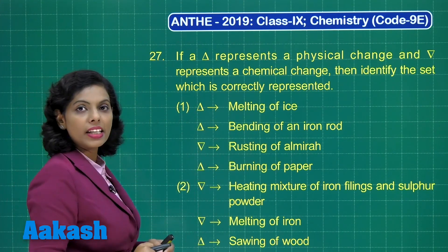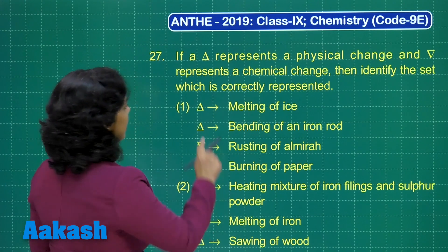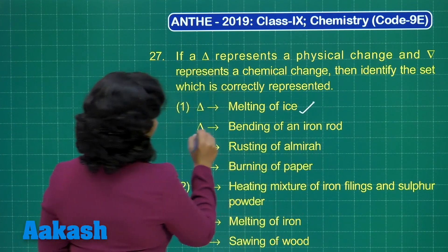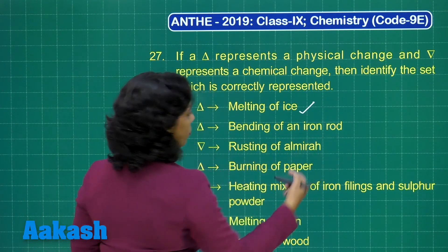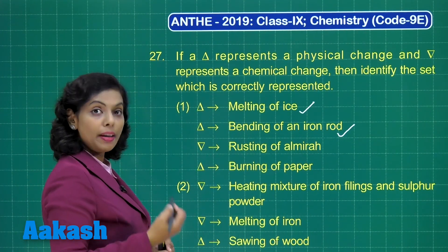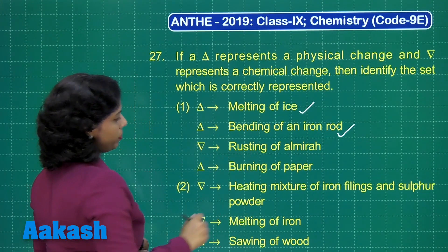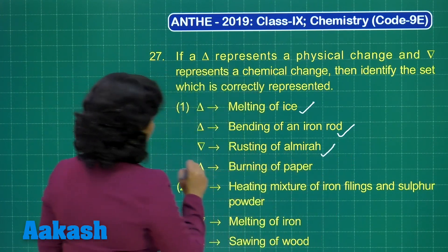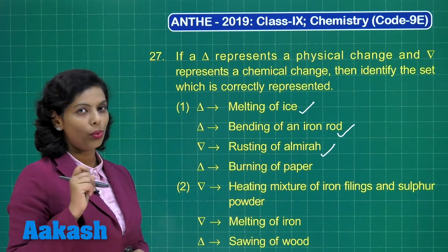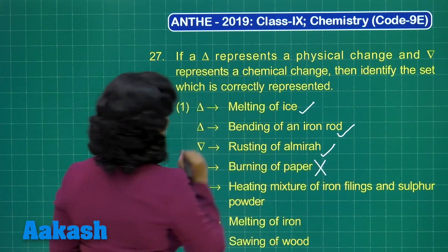In option 1, delta represents melting of ice — that is a physical change, so it's correct. Delta representing bending of an iron rod is also correct as it's a physical change. Rusting of iron is a chemical change and is represented by the inverted triangle — correct. However, delta representing burning of paper is incorrect, because burning of paper is a chemical change, not a physical change. So option 1 is not correct.